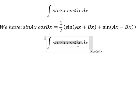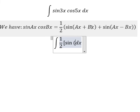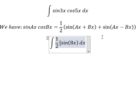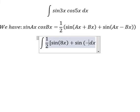We will have sin(A+B) where A plus B equals three plus five, which gives us sin(8x), plus sin(A-B) where three minus five gives us sin(-2x).